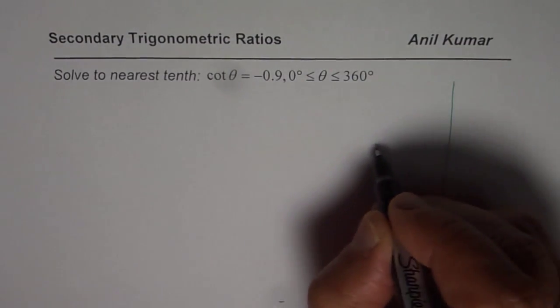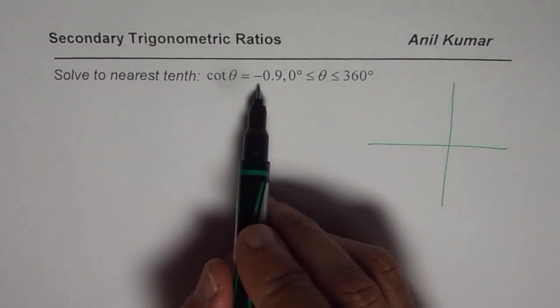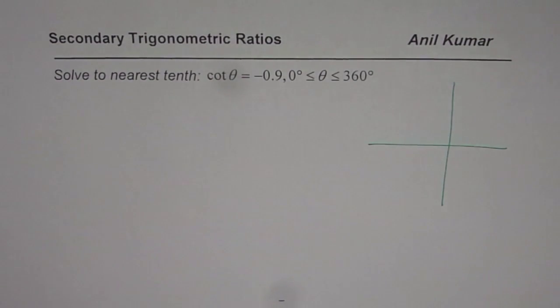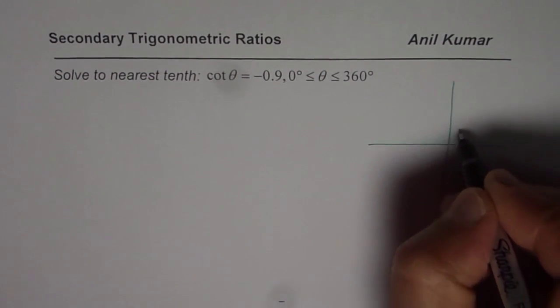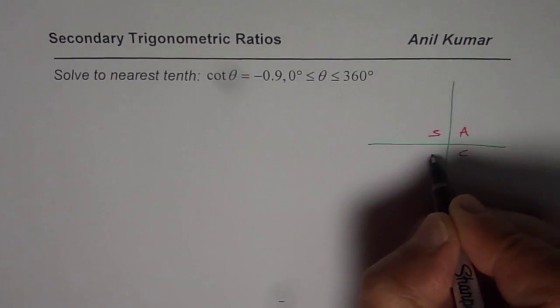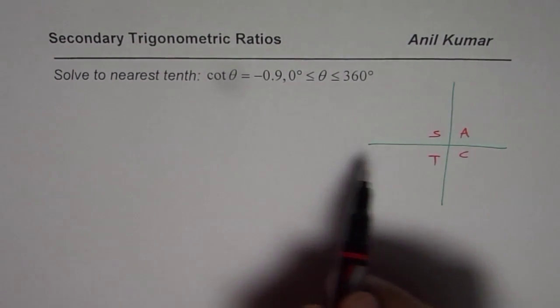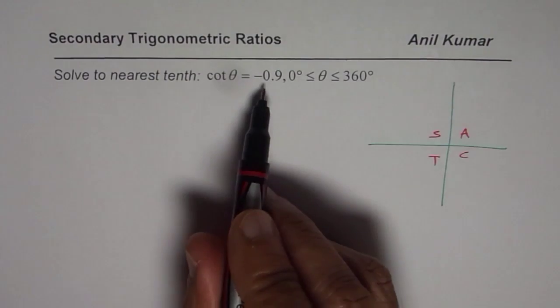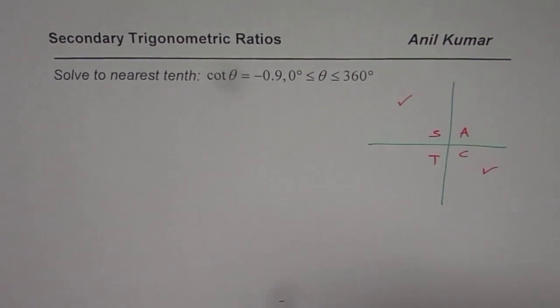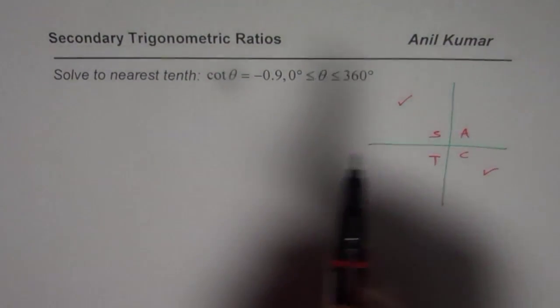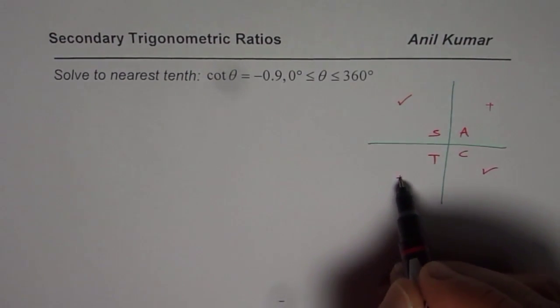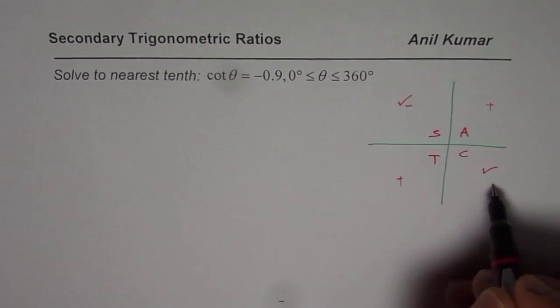cotangent θ equals minus 0.9 where θ is between 0 to 360 degrees. We are looking for the value of θ so that we get a negative answer. When you apply the CAST rule, we know cotangent is reciprocal of tan. Since we are expecting a negative answer, this solution should lie in quadrant 2 or in quadrant 4. Cotangent will be positive in these two quadrants. It is negative in these two.